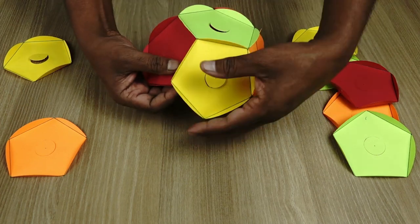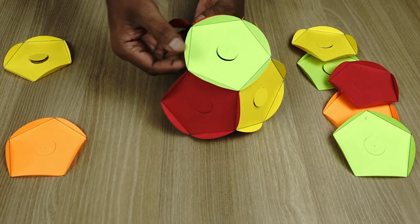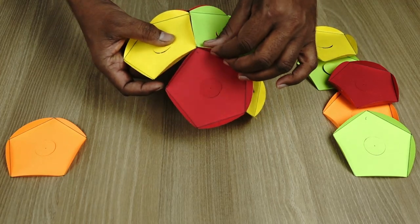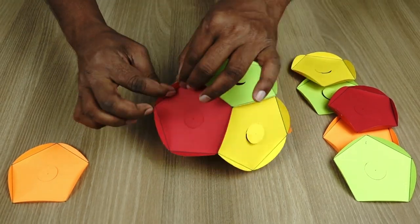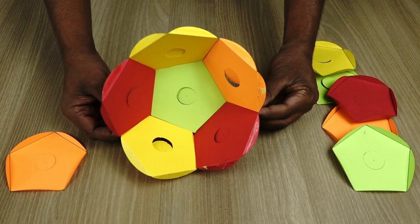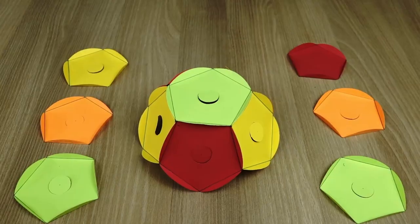As we complete attaching six pentagons to each other you will see that we have completed halfway. So this looks like a vessel or half of the dodecahedron that we want to make.